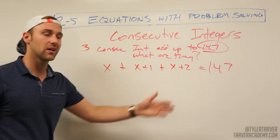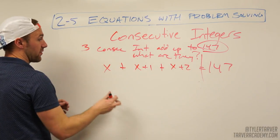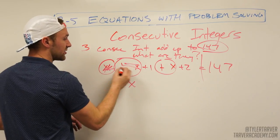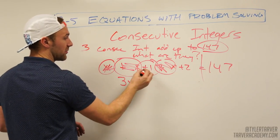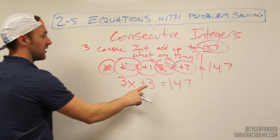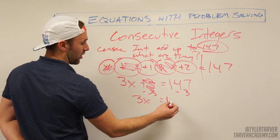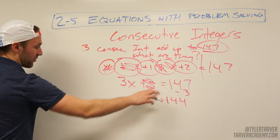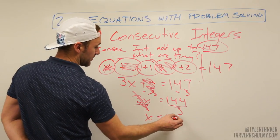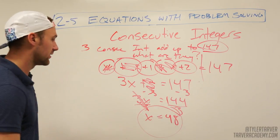Combine like terms on the left side of the equal sign. x plus x plus x is 3x. Then 1 plus 2 is 3. So we have 3x plus 3 equals 147. Subtract 3 from both sides: 3x equals 144. Divide both sides by 3: x equals 48.